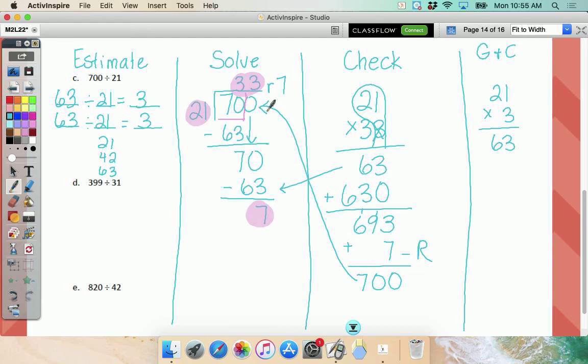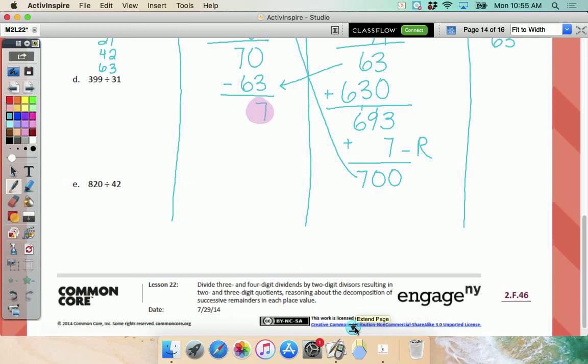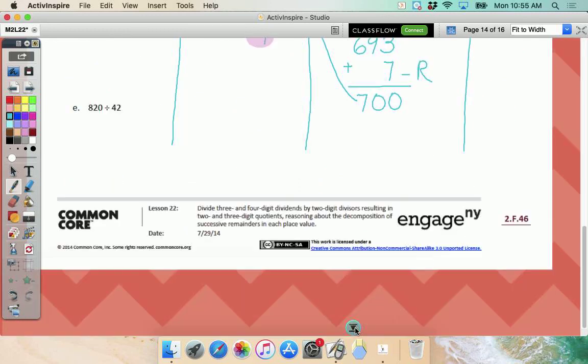The only thing different than lesson 21, which was so easy for us, is we're starting with two digits instead of three. That's it. Let's go down and do E. The main reason is because I don't have room to write on D.